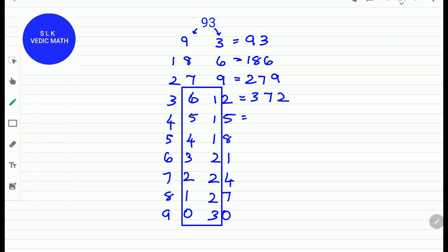For 93 times 5, add 5 plus 1 which is 6 and write down the 4 as it is. So 93 times 5 is 465. For 93 times 6, we add 3 plus 2 which is 5. Write down the 6, write down the 5 and 1. So 93 times 6 is 651.